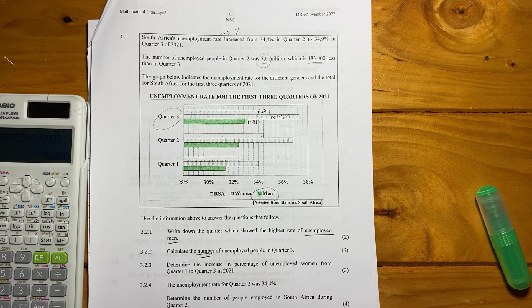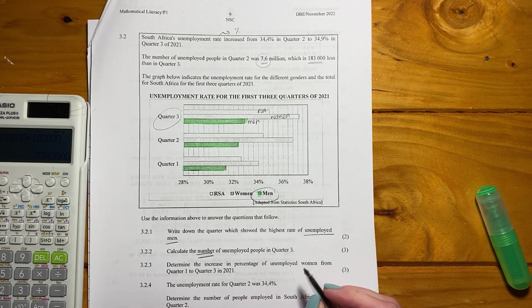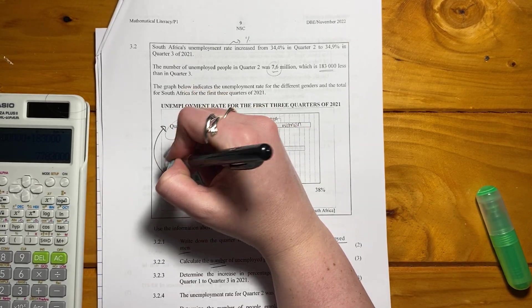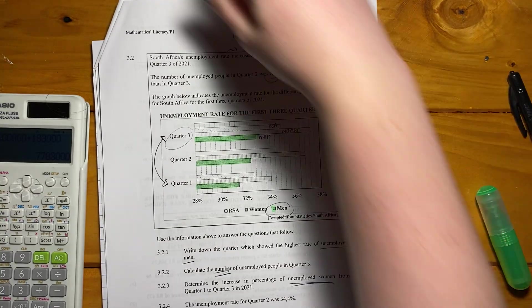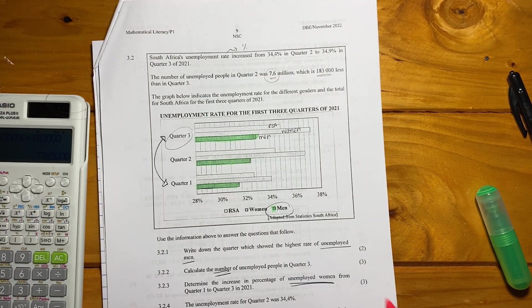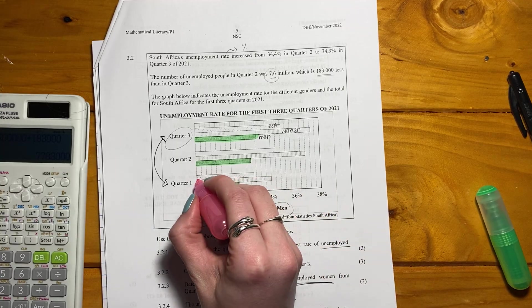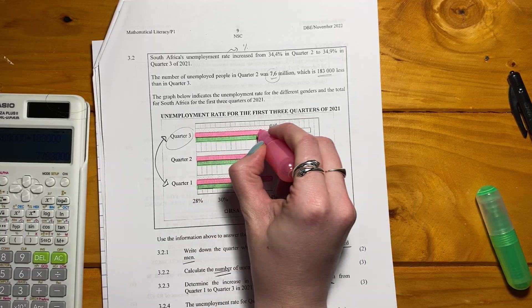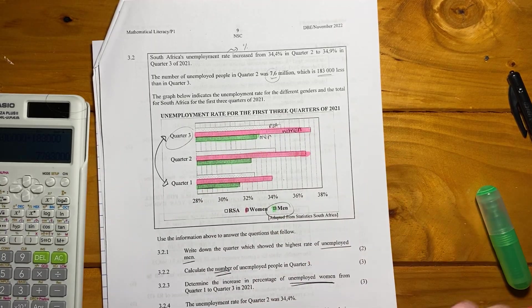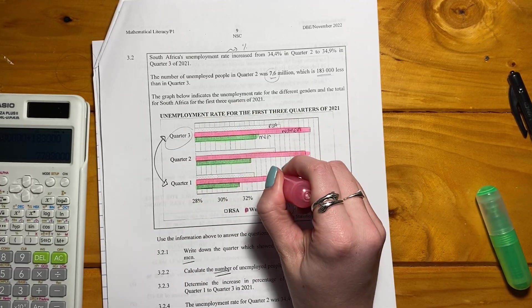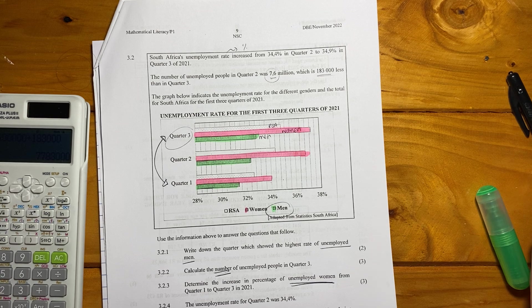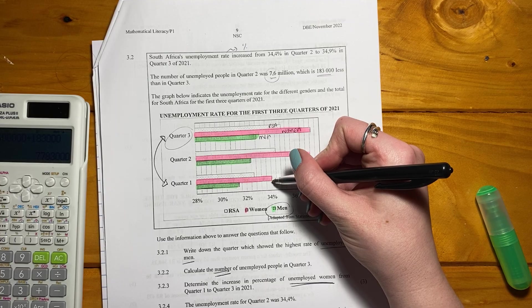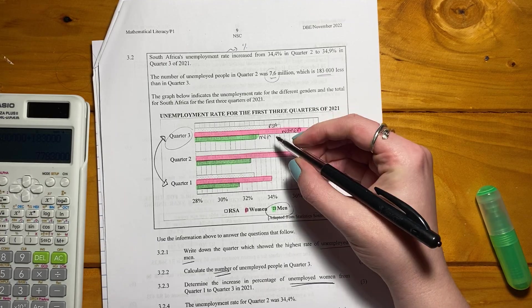Let's look at 3.2.3. It says determine the increase in percentage of unemployed women from quarter one to quarter three. So we're comparing these two here. We're not really looking at quarter two at all. Let's look at women. So women here are the striped stripes. So we're going to just do this just to help us out, and there's our women. So we want the difference between this here and that there.